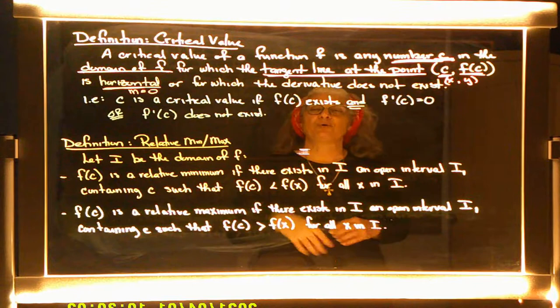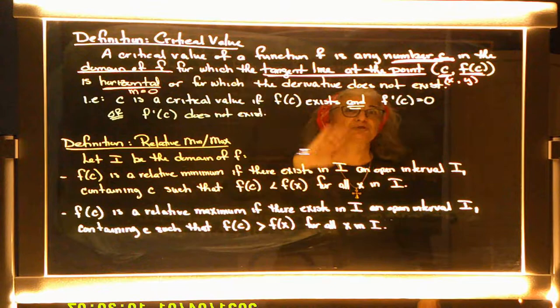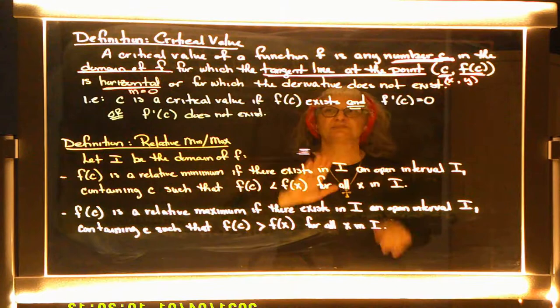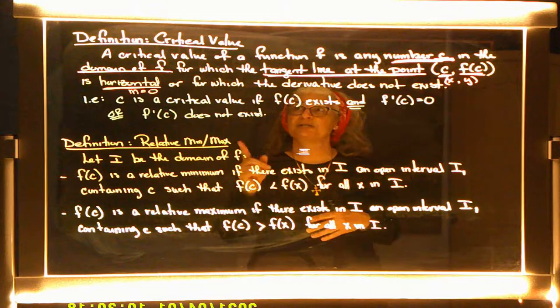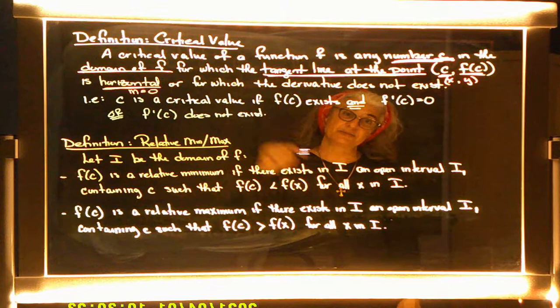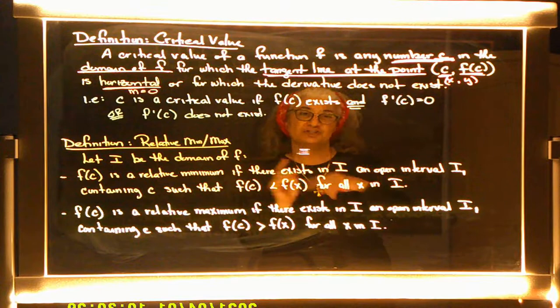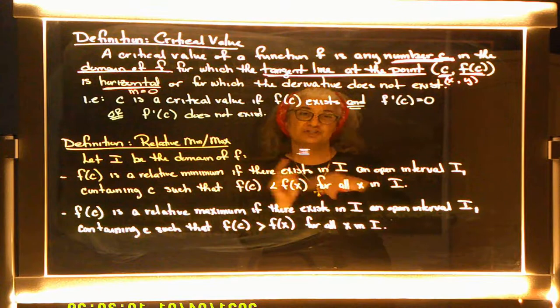Or the first derivative at c doesn't exist. We'll do examples on how to find a critical value, so hang in there. Remember: a critical value is a turning point — maybe the function is increasing then decreases, or decreasing then increases. When we find that critical value showing where the function changes, it can help us discover relative minimums and maximums.